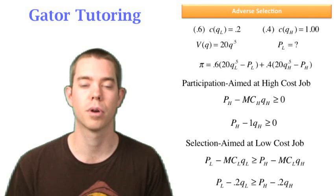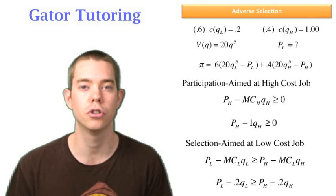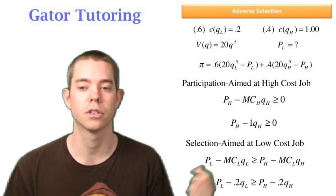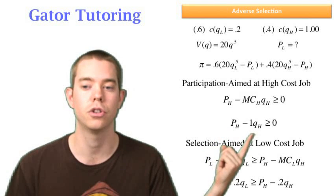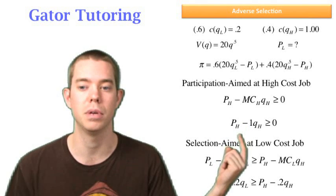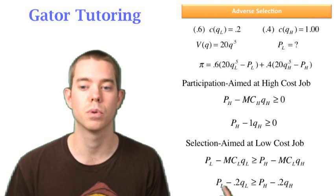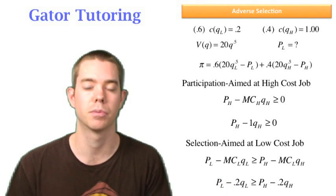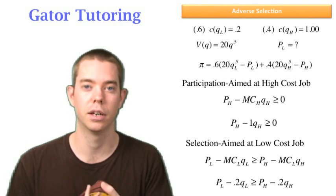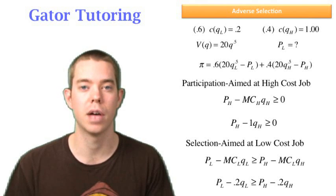Now in all these problems, there's actually four constraints. And two of them are binding. These are the two binding constraints. The non-binding constraints are just the opposite constraints. So in this case, we had PH minus 1QH is greater than or equal to zero. Well the non-binding participation constraint would be PL minus 0.2QL is greater than or equal to zero. Likewise, we would just substitute everywhere we see a PL and a QL. We would substitute it with PH and a QH. So you might want to know that. There's definitely a chance that he'll talk about naming all four constraints, but know that these are the two that bind.